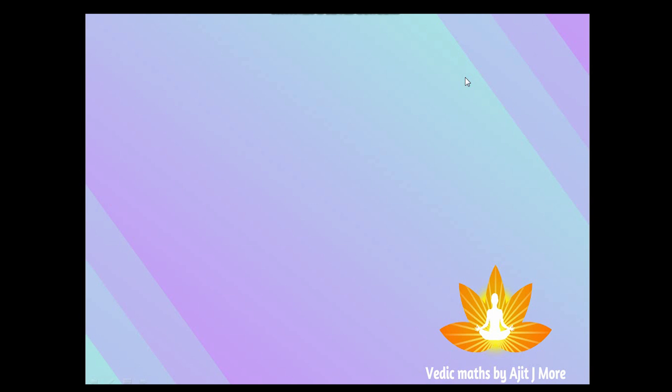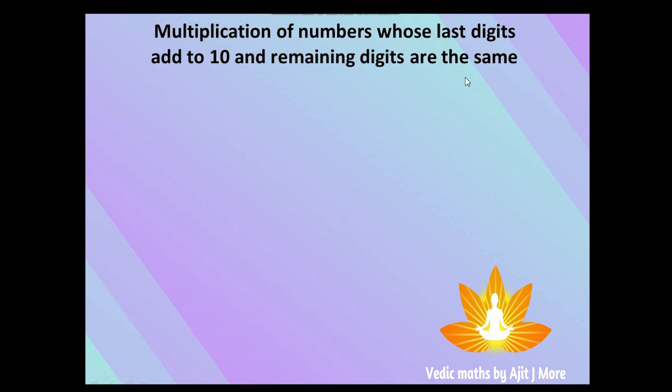Today we are also going to use the same sutra: Ekadhikena Purvena, that is 'one more than the previous', which we had used for finding out squares of numbers ending with 5. So let's start — we are going to see multiplication of numbers whose last digits add to 10, that is the addition of unit place digits is 10, and the remaining digits are same.